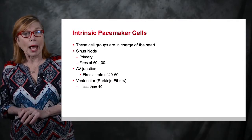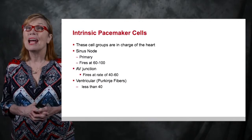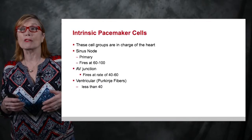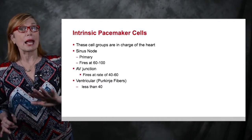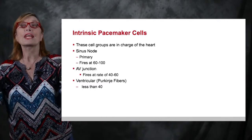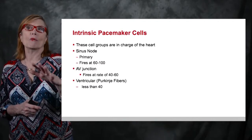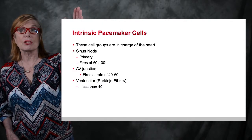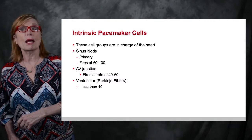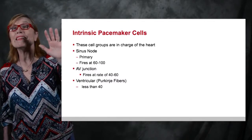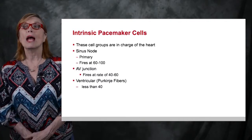If your sinus node fails, the AV junction becomes the secondary pacemaker, firing at a rate of 40 to 60. If both the sinus node and AV junction fail, your Purkinje fibers will fire at a rate around 40. Sinus node fires at 60 to 100; AV junction at 40 to 60; ventricular Purkinje fibers at 40.